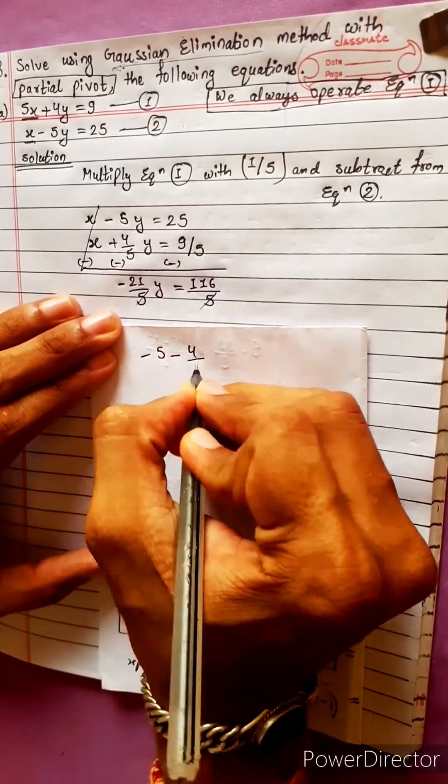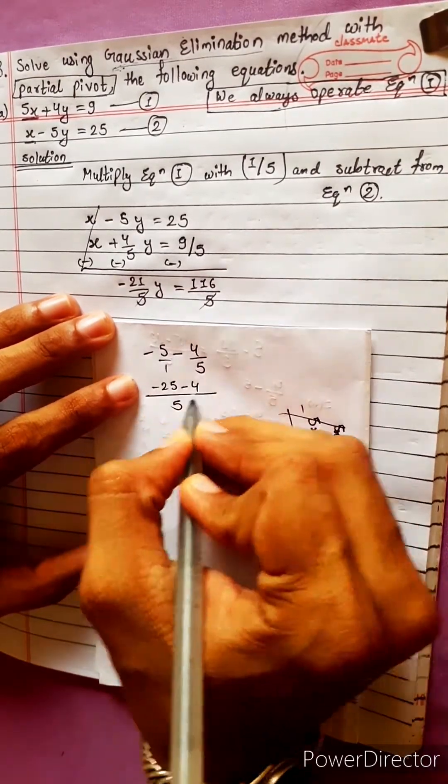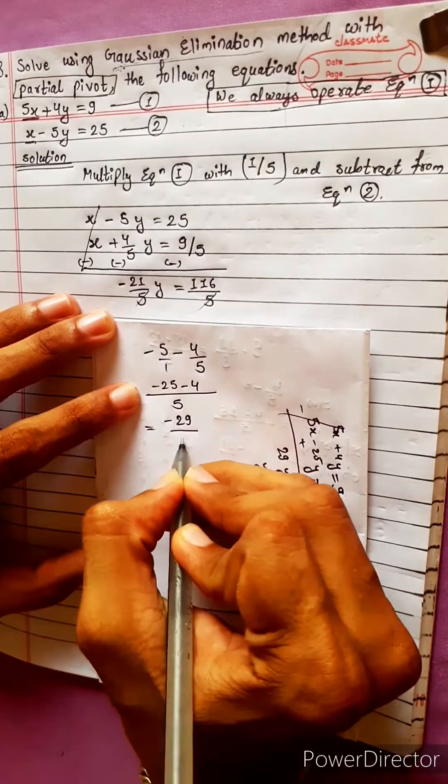Minus 5 minus 4/5. Taking LCM 5: minus 25 minus 4 equals minus 29/5.